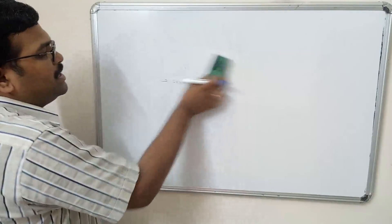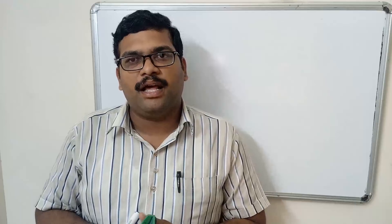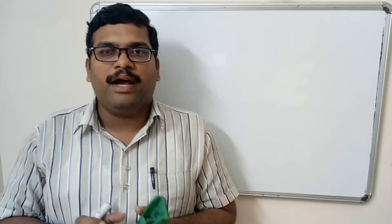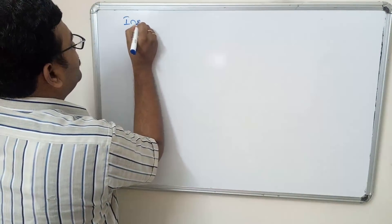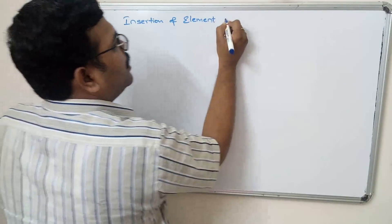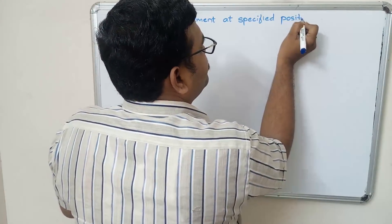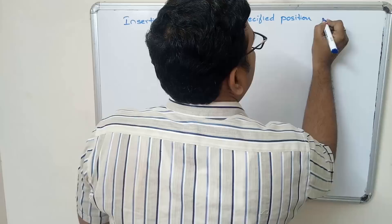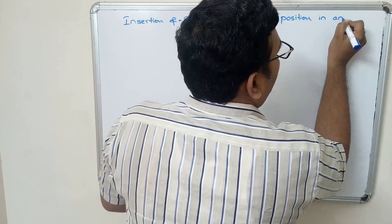Let us look at these operations one by one. The first one is insertion of an element into an array. We declare a one-dimensional array, take the size of the array, read all elements into it, and then add one element at a particular position. This is called insertion of an element at a specified position.